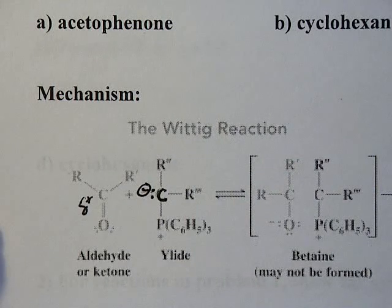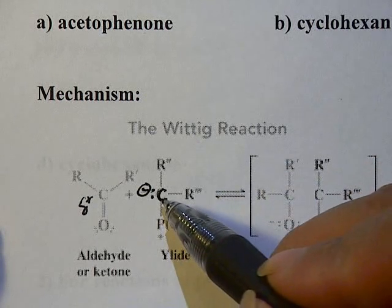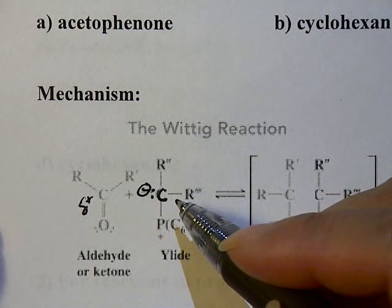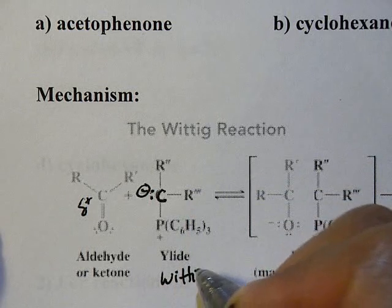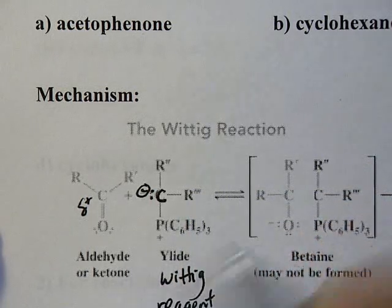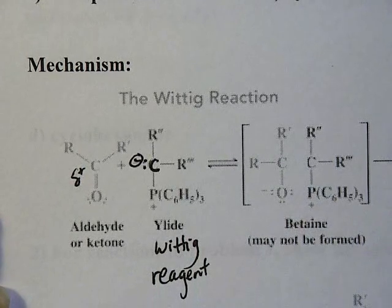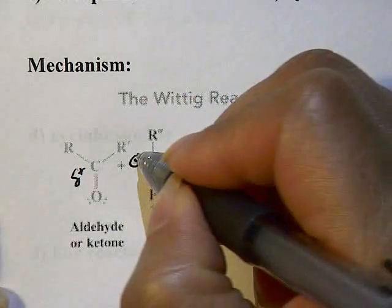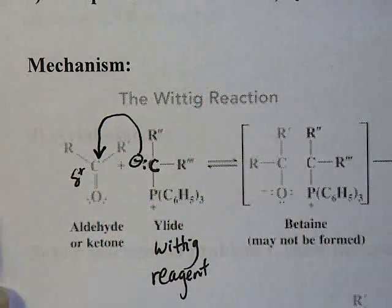The name 'ylide' refers to a compound that has a negative and a positive charge right next to each other — that's what is called a Wittig reagent. So the Wittig reagent, also called a ylide, is the nucleophile, and it's going to be attracted to the electrophilic carbon of the carbonyl.